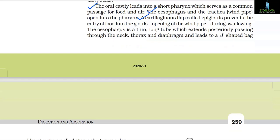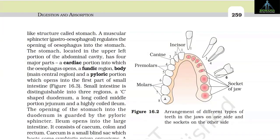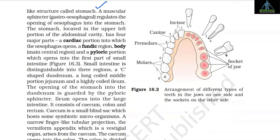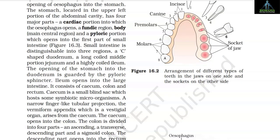The oesophagus is a thin long tube which extends posteriorly passing through the neck, thorax and diaphragm and leads to a J-shaped bag-like structure called the stomach. A muscular sphincter, the gastroesophageal sphincter, regulates the opening of the oesophagus into the stomach. The stomach is located in the upper left portion of the abdominal cavity and has 4 major parts: a cardiac portion into which the oesophagus opens, a fundic region, a body, and a pyloric portion which opens into the first part of the small intestine.